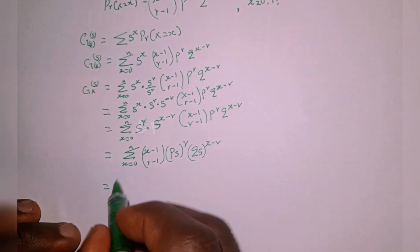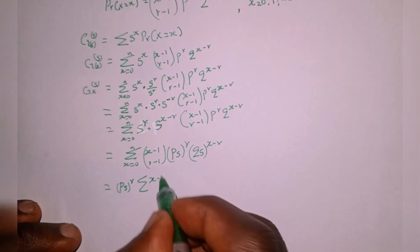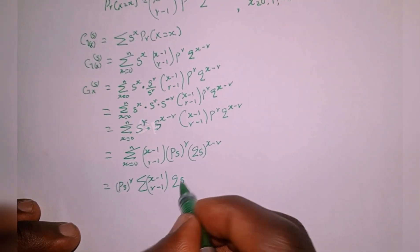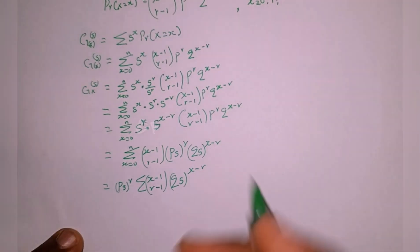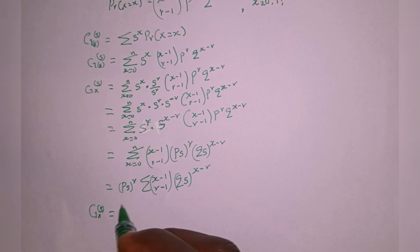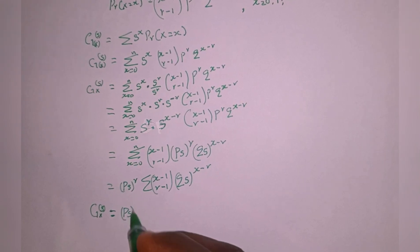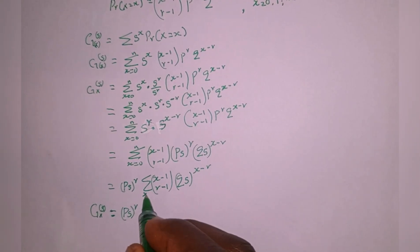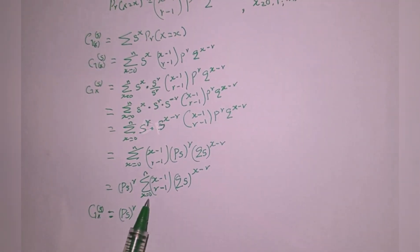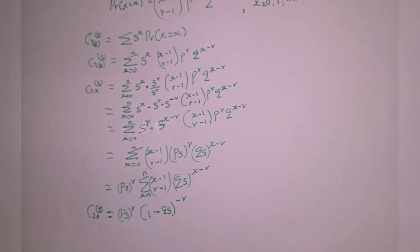The next thing is to take ps raised to the power of r outside. So we have ps raised to the power of r, multiplied by the summation of x minus one combination r minus one, times q·s raised to the power of x minus r. Therefore, the probability generating function G sub X of s equals p·s raised to the power of r. Taking the summation as x goes from zero to n gives us one minus q·s, raised to the power of minus r.